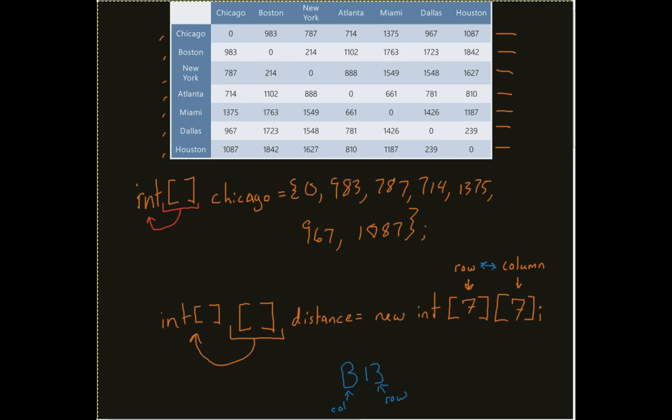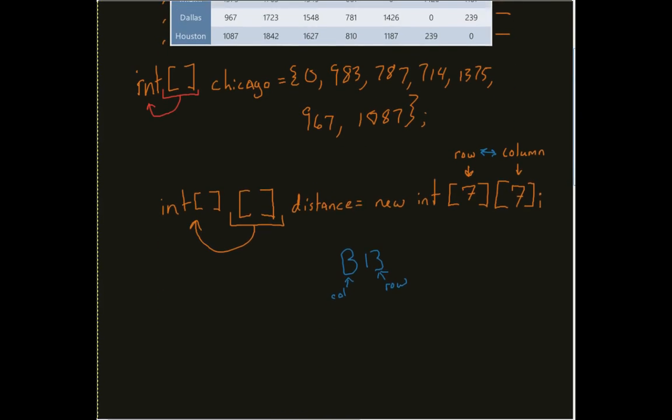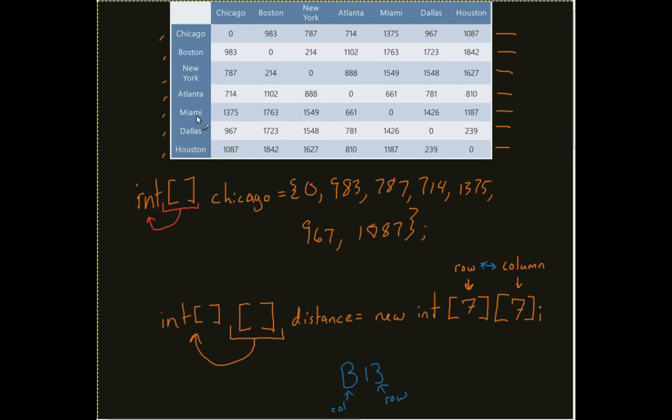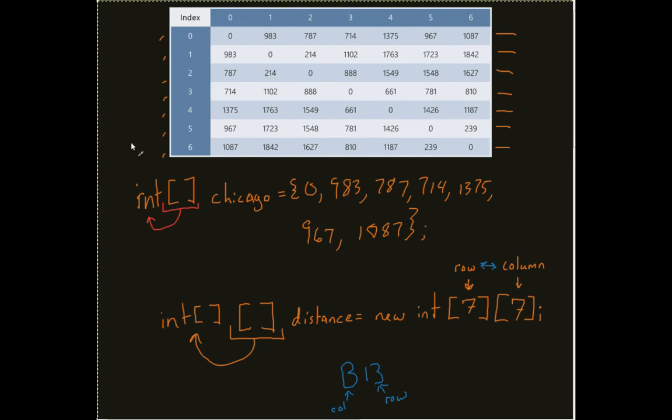If I wanted to take this data and apply it, one thing we can think about is this array. Instead of Chicago, Boston, New York, Atlanta, Miami, Dallas, Houston, what I would think about is more along the lines of looking at it in terms of indices.